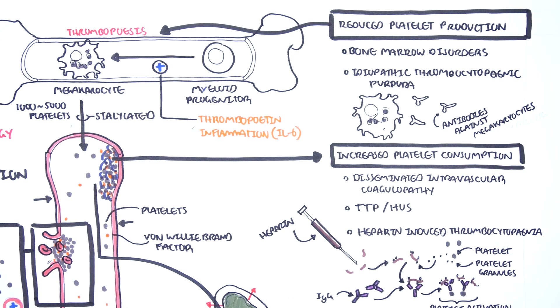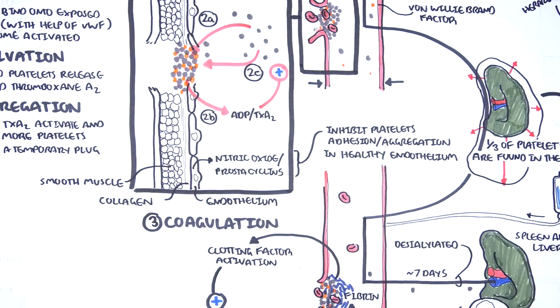Finally, infection is another very important cause of thrombocytopenia, which occurs through a number of mechanisms: via ITP, so immune-mediated, bone marrow suppression, as well as platelet consumption.